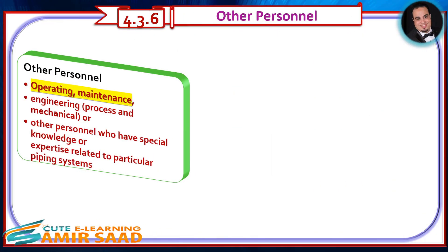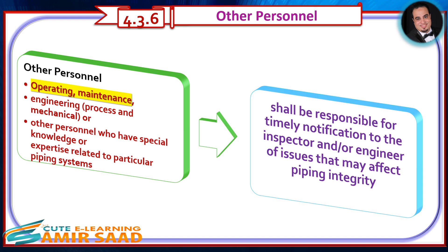Other personnel — operating, maintenance, engineering, process and mechanical, or other personnel who have special knowledge or expertise related to particular piping systems — shall be responsible for timely notification to the inspector and/or engineer of issues that may affect piping integrity.